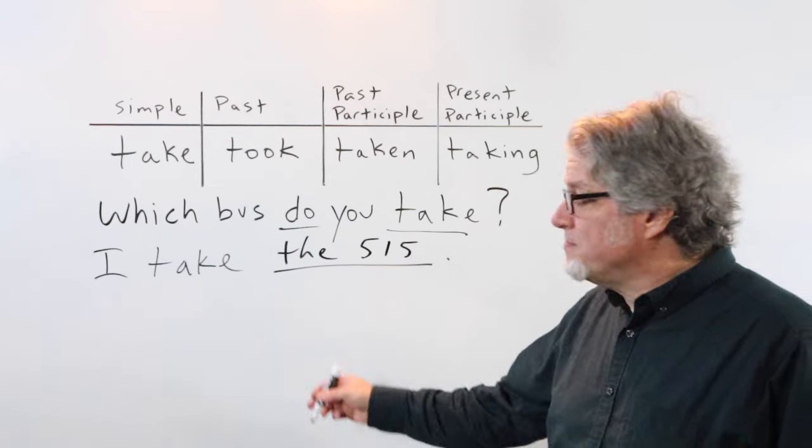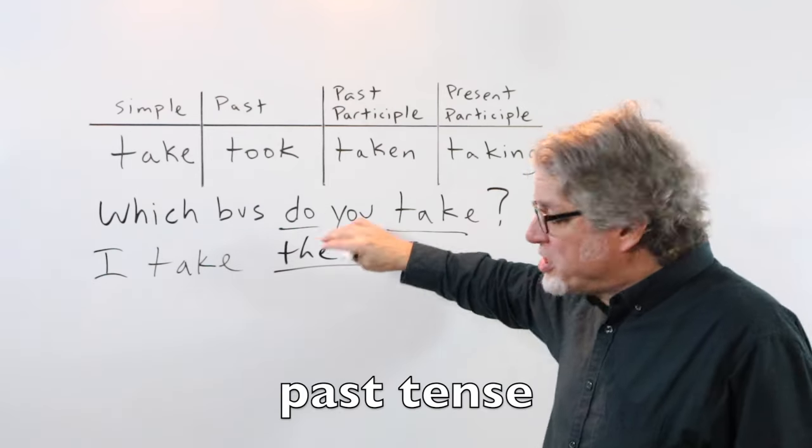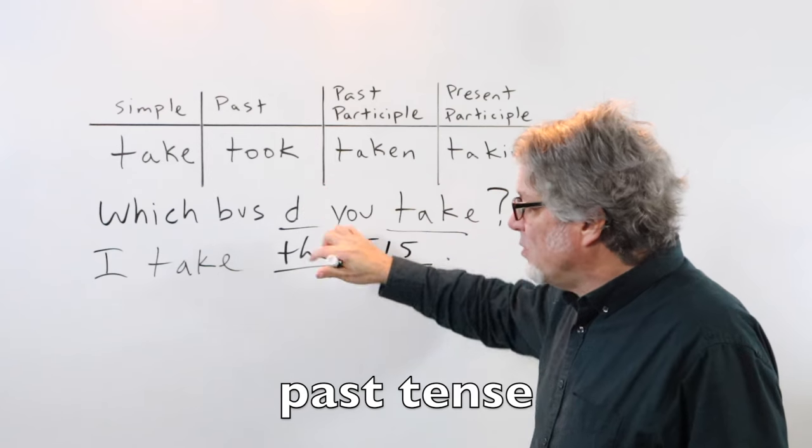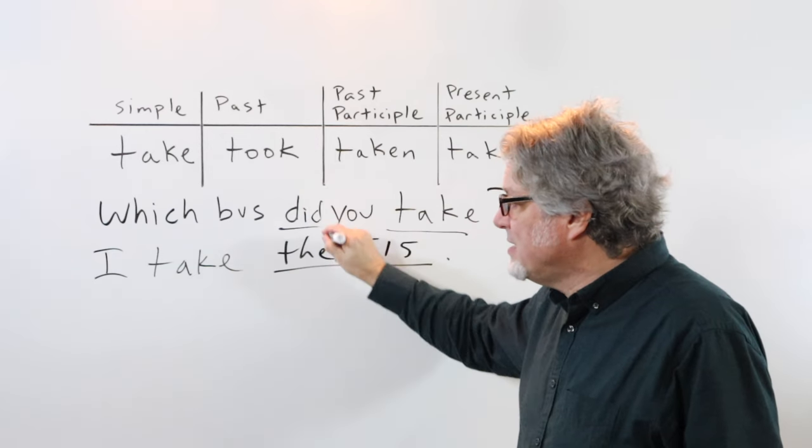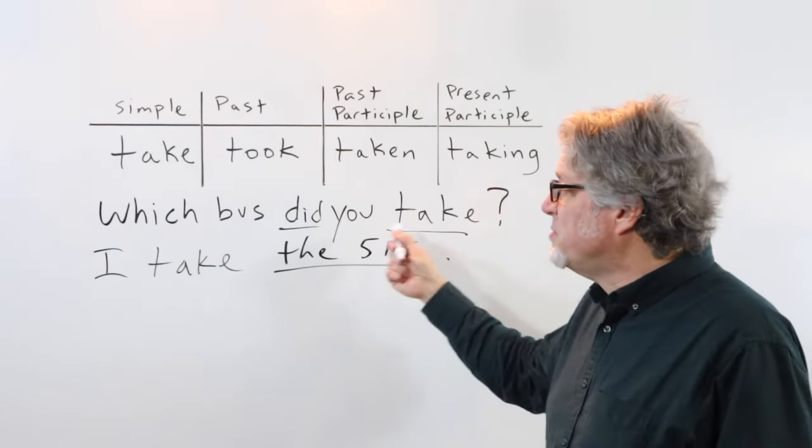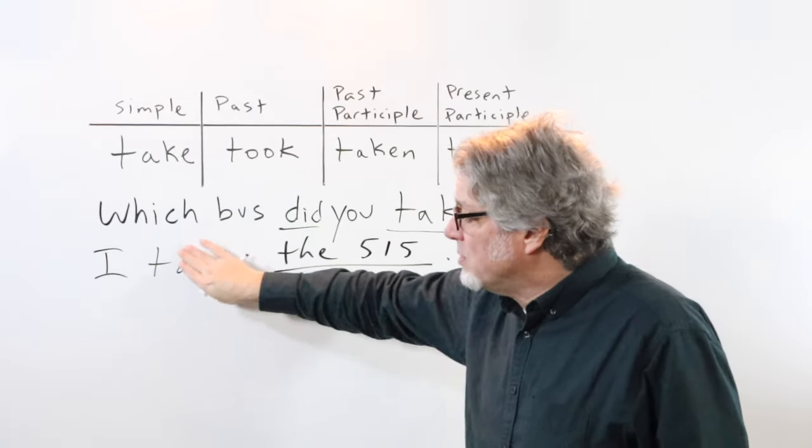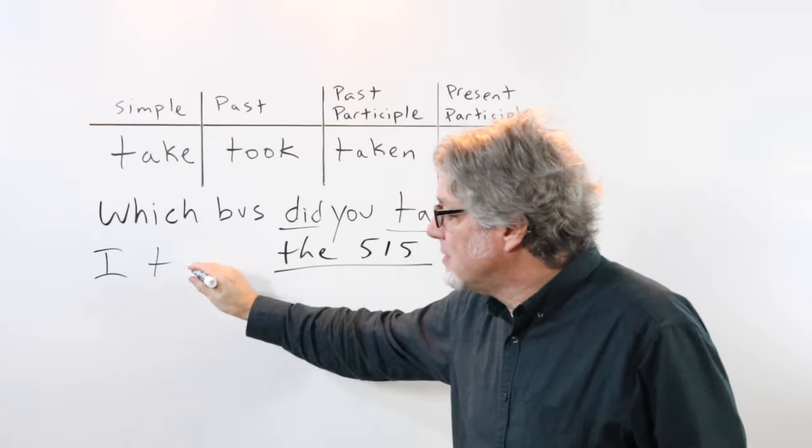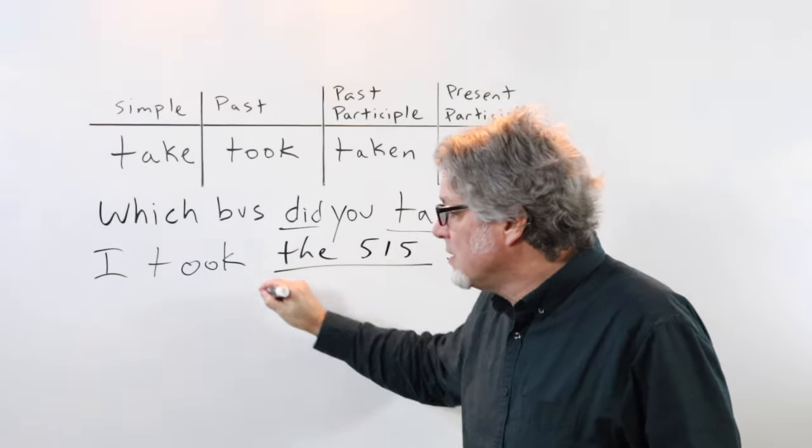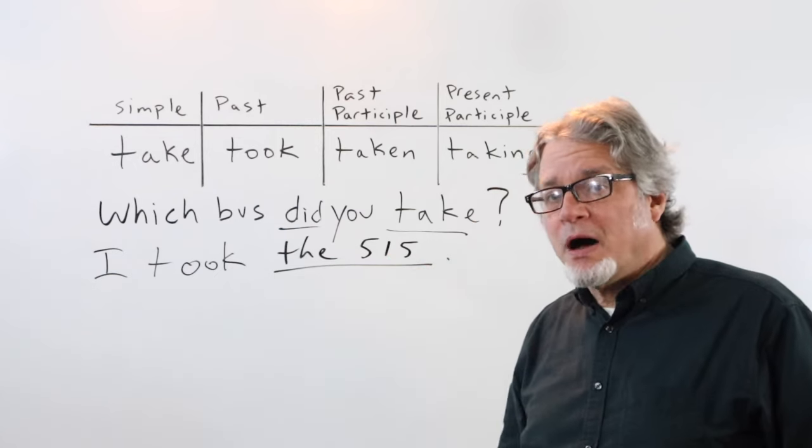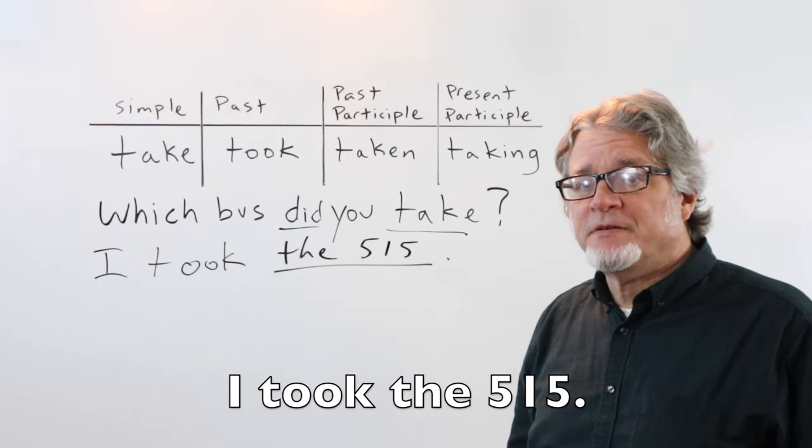To make this past tense, just change the helping verb. Which bus did you take? The main verb is still in the simple form. And your answer would be, in the past tense, I took... and then the name of the bus. I took the 515.